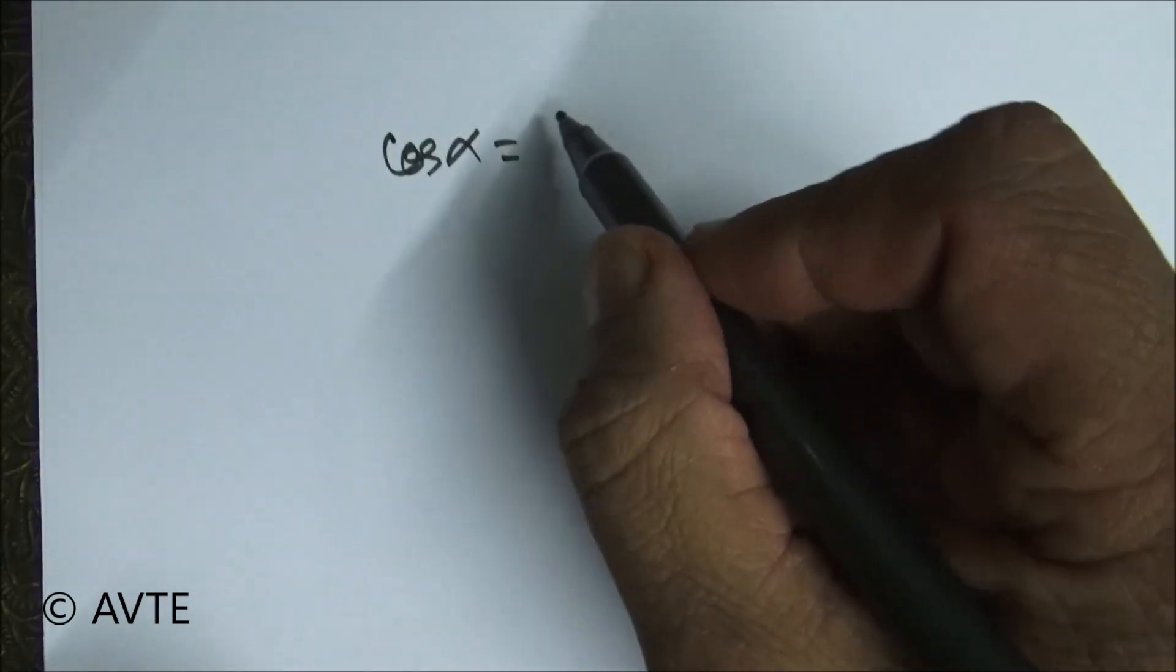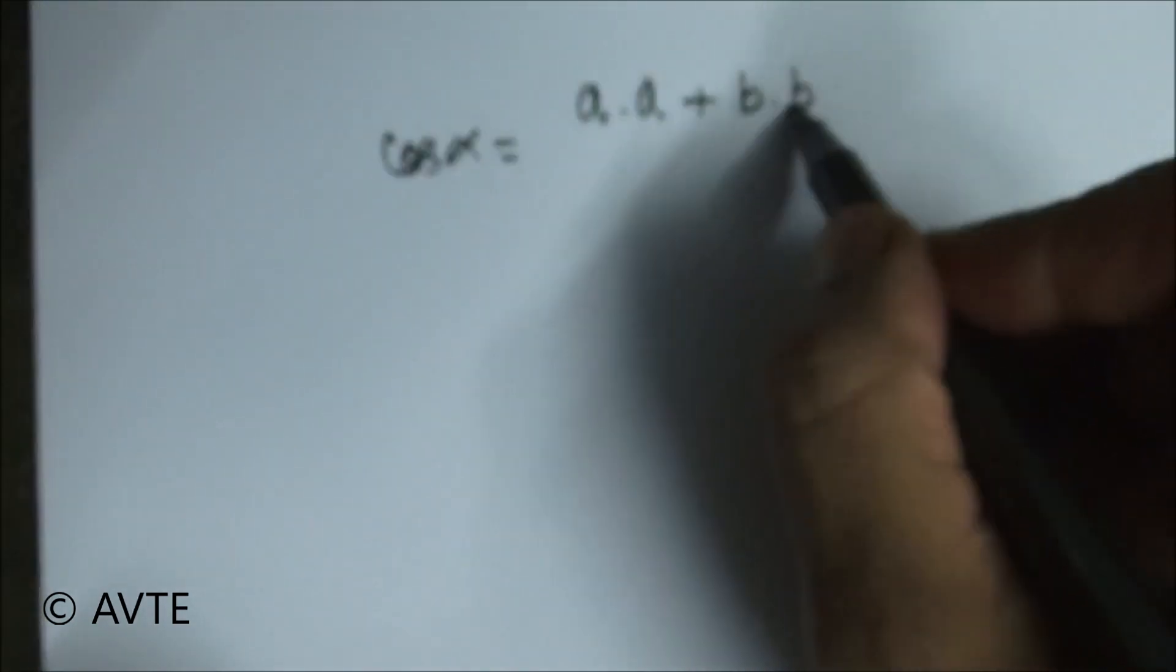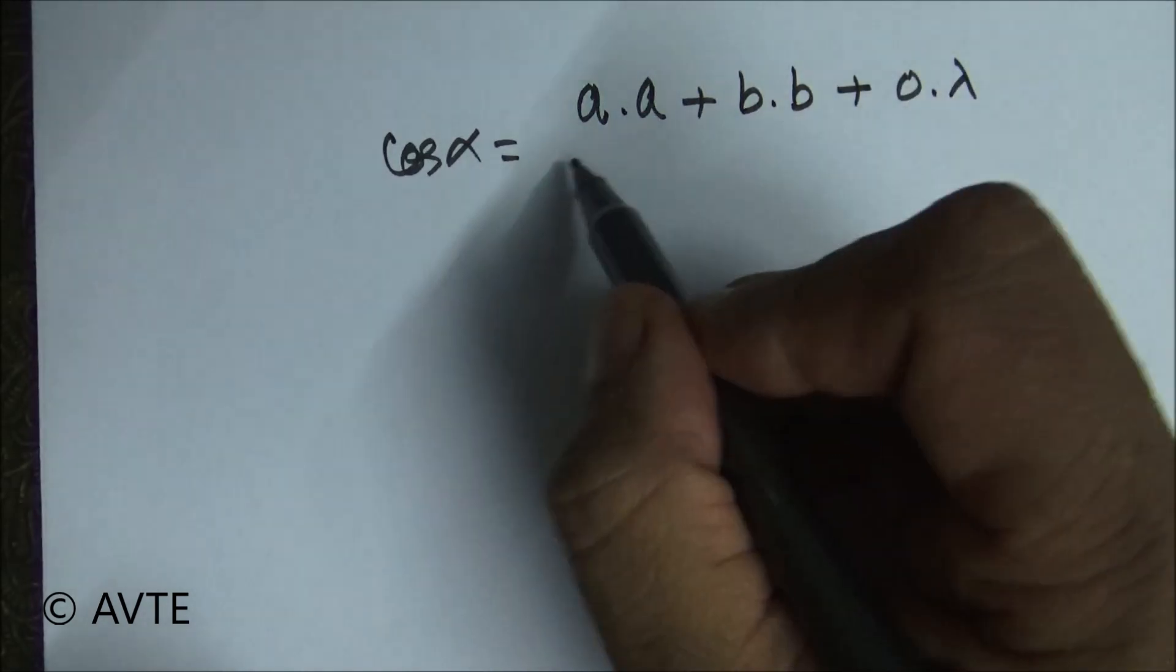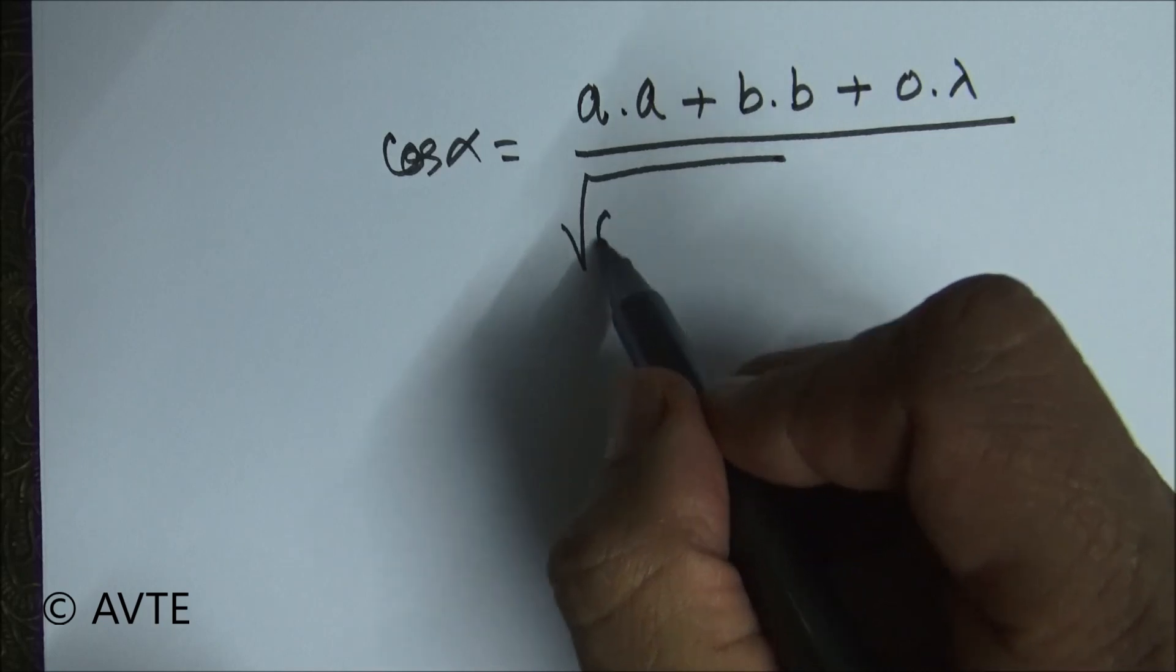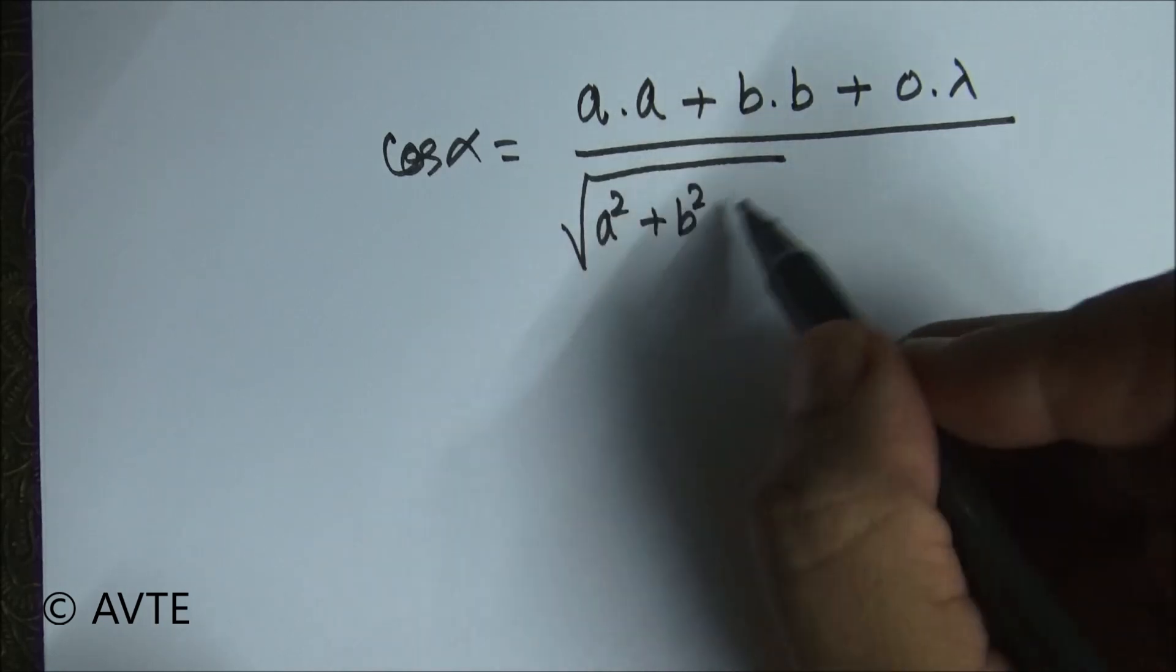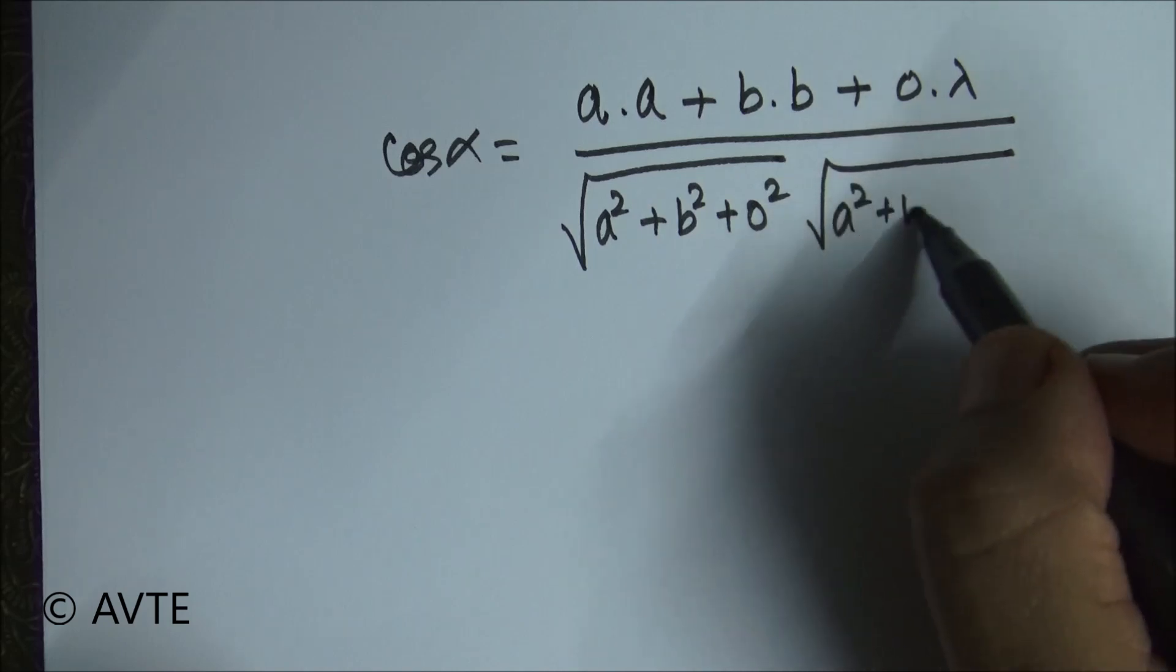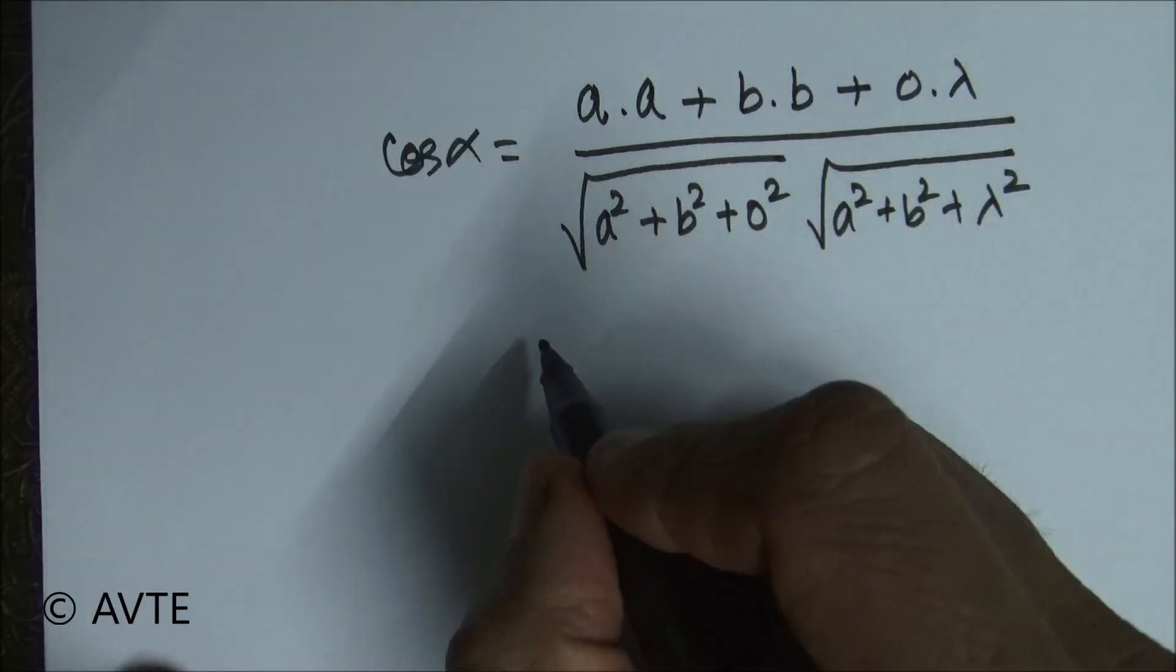cos alpha is a1a2 that is a into a plus b1b2 plus c1c2, and that is 0 into lambda, divided by under root of a1 square plus b1 square plus 0 square into under root of a square plus b2 plus lambda square. So now when we simplify we get